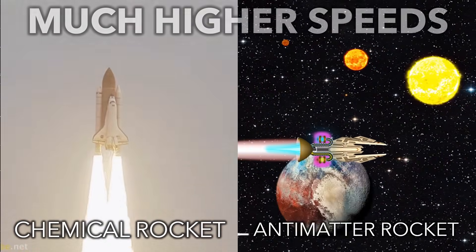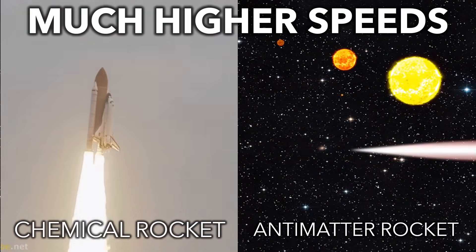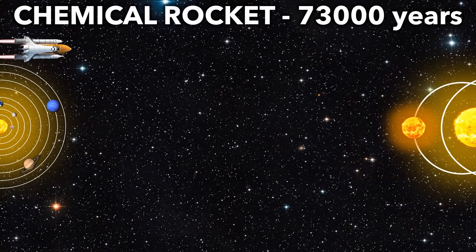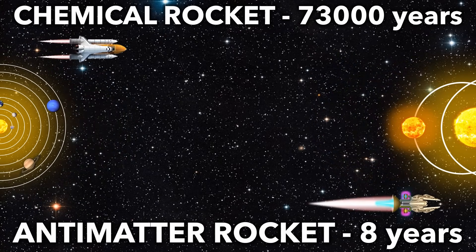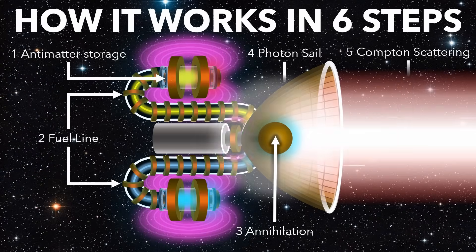So antimatter rockets can reach much higher speeds than chemical rockets, reducing the travel time to our nearest star from 73,000 years to under 10. Let's now see how it works in 6 steps.